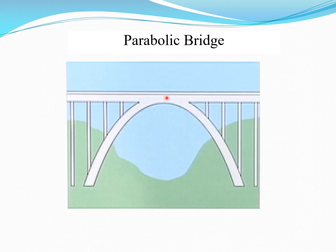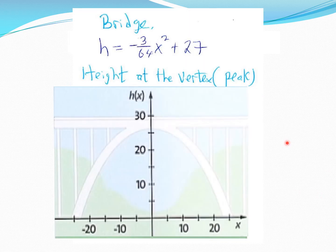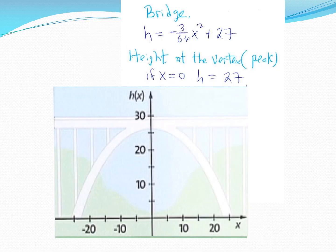Another application is the parabolic bridge. The height of the bridge corresponds to the width, and the equation links them — again a parabola shape. We position x = 0 at the center, with positive and negative values on either side, and the h-axis as the axis of symmetry.